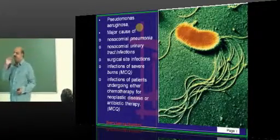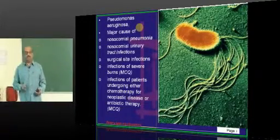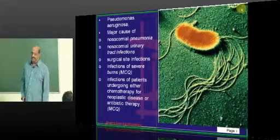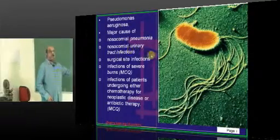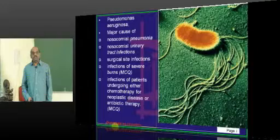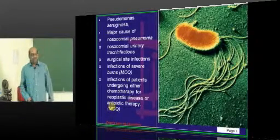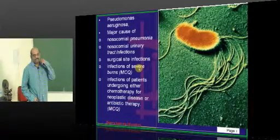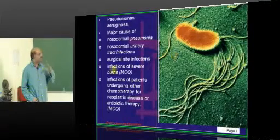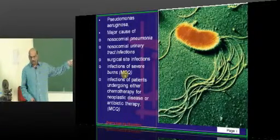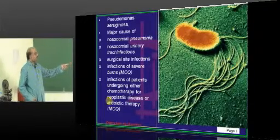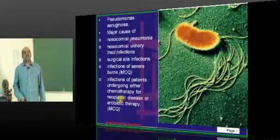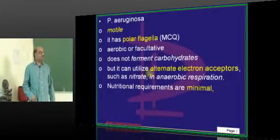Pseudomonas — let's talk about 5 to 10 classical points to remember. It is the major cause of nosocomial pneumonia. We are worried about Pseudomonas in nosocomial UTI because of urinary catheters, catheter intervention, surgical site infection, severe burns patients, and in patients undergoing neoplastic therapy or chemotherapy who have a low neutrophil count. Pseudomonas is the infection which needs to be remembered in all these settings.